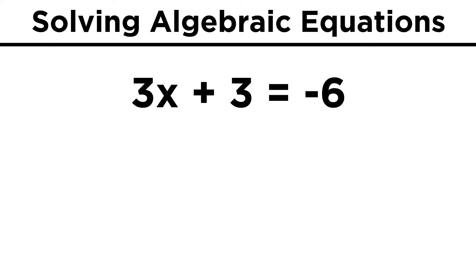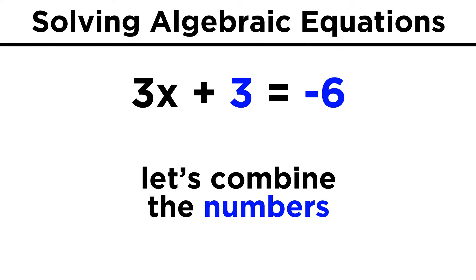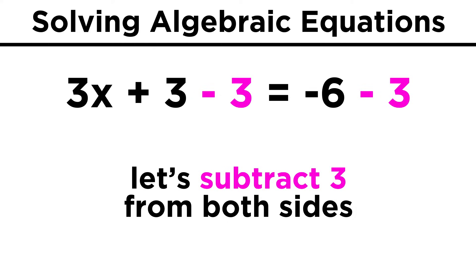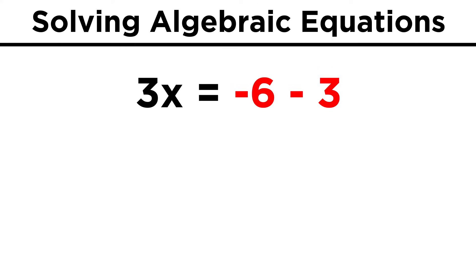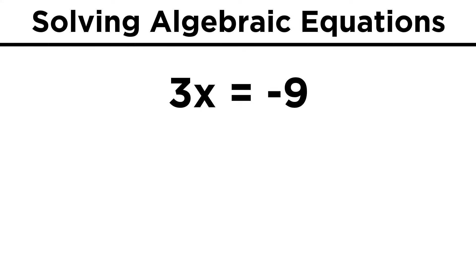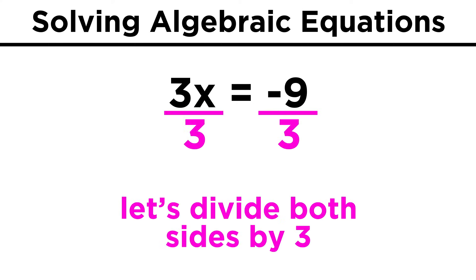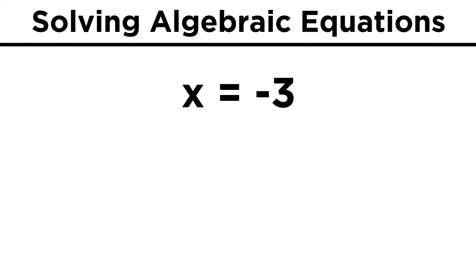Now we have 3x + 3 = -6. We will want to get all the numbers together in such a way that gets the x term by itself. That means our next move should be to subtract three from both sides. That will get rid of the three on the left, and after we combine like terms, we get negative nine on the right. Now for the last step, since we have 3x, we will need to divide by three. That leaves us with x = -3.